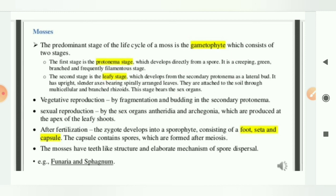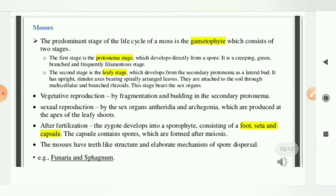They are attached to the soil through rhizoids, and these rhizoids are multicellular and branched. And this stage bears sex organs also. Whereas if I talk about vegetative reproduction, it is through fragmentation and budding in your secondary protonema, which is developed from the leafy stage. Remember this for your competitive point of view.